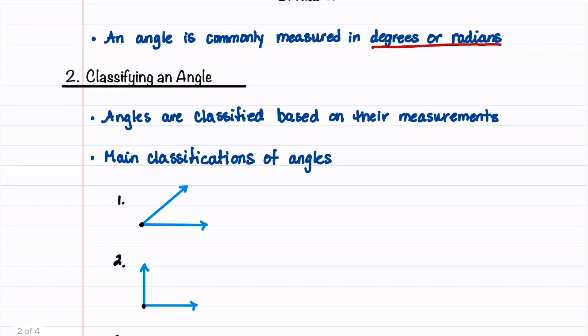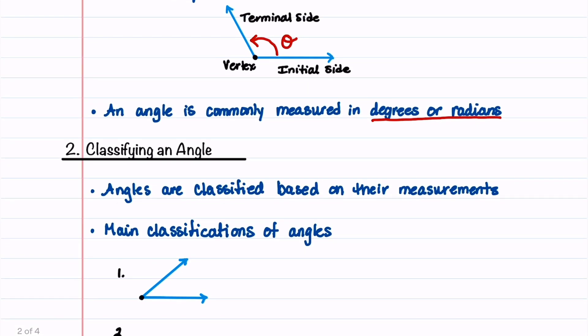Let's now talk about how we classify an angle. Angles are classified based on their measurements. There are five main classifications of angles. We'll call this first angle theta, and we're going to restrict theta to be between zero degrees and 90 degrees, or if we think about that in terms of radian measure, we'll say that zero is less than theta is less than pi over 2. And this type of angle is called an acute angle.